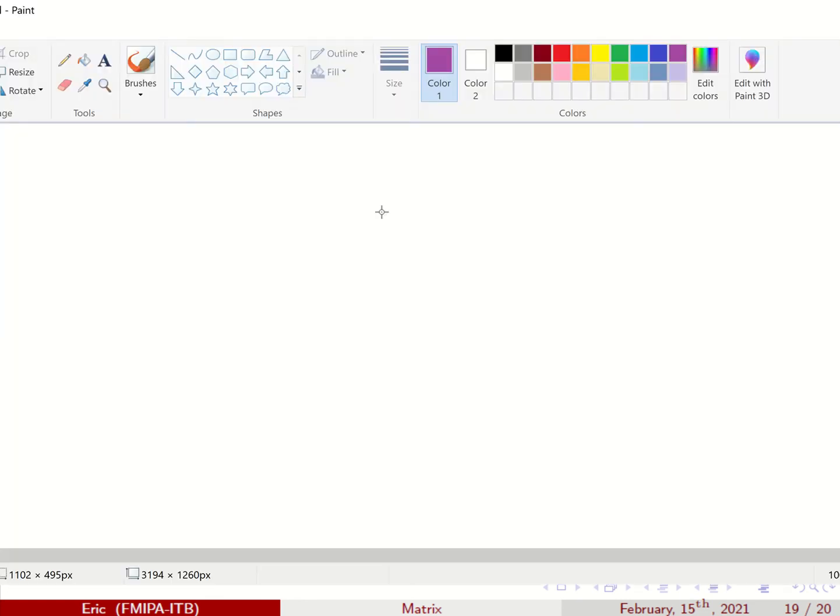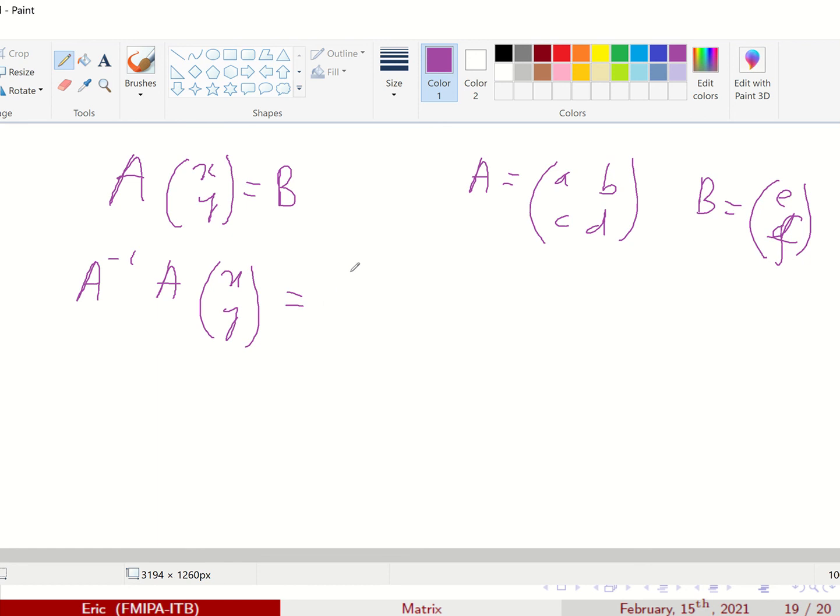I can equivalently look at this. If I have Matrix A times xy equals B. A is 2 times 2 matrix, and B should be maybe E, F. So how do I find the xy? You multiply A inverse. A inverse of A will become identity, will become A inverse of B. And identity times this will become xy equals A inverse of B.